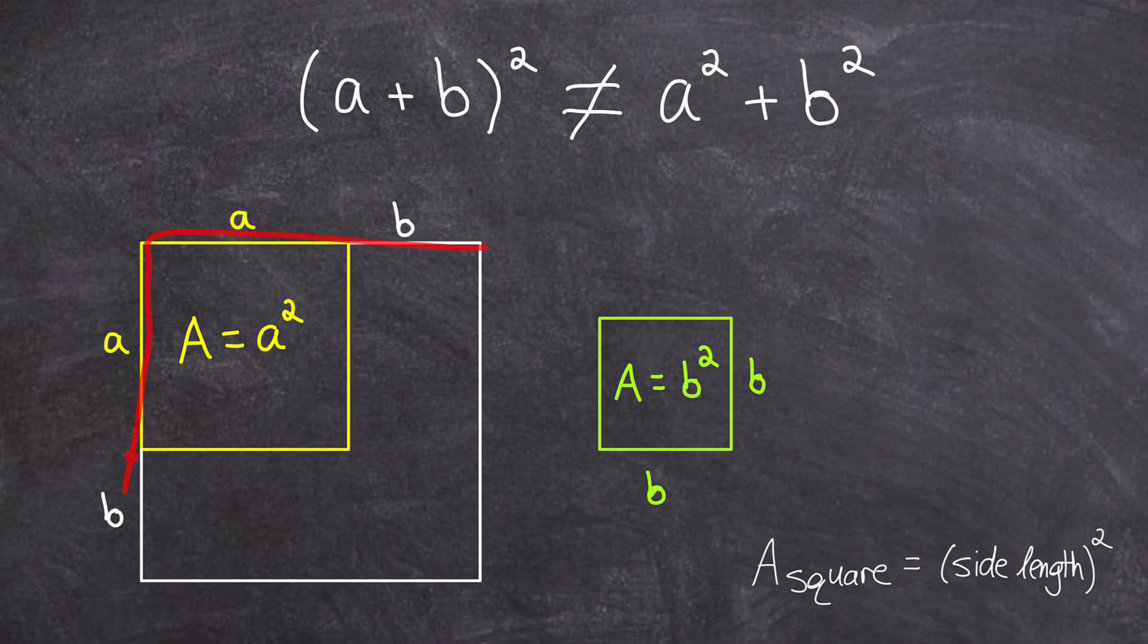the area of this big square would have to be exactly equal to a squared plus b squared, which means it would be exactly equal to the sum of the areas of this yellow square with side length a plus this green square with a side length of b.